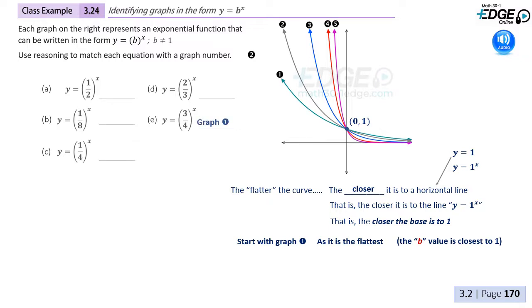From this, we can determine that because graph 1 is closest to 1 to the x, it should be the one with the base closest to a value of 1. Comparing 1 half, 1 eighth, 1 quarter, 2 thirds, and 3 quarters, we find that 3 quarters is the largest of these numbers and the closest to 1.